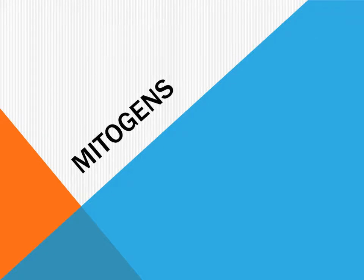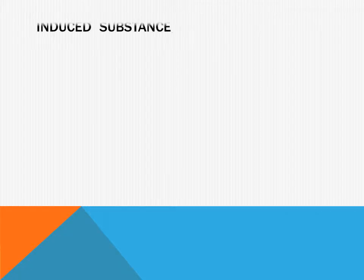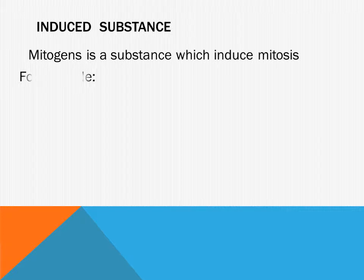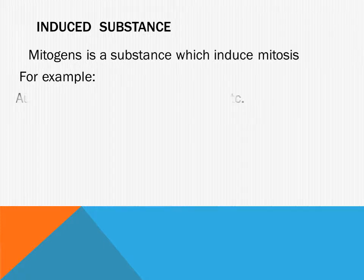In this video you will know about mitogens. A mitogen is a substance which induces mitosis. Mitosis is a type of cell division. For example, auxin, cytokinin, gibberellin, and insulin are mitogens. Auxin is a type of substance which occurs in plants in order to cause cell elongation.